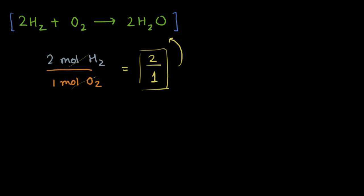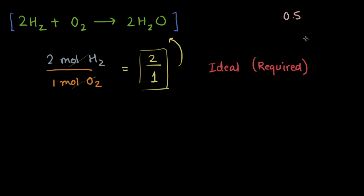This is the required ratio to make two moles of dihydrogen monoxide, which is a fancy way of saying water. This is the ideal — this is required. Now let's say you are given some hypothetical amount: half a mole of oxygen and two moles of hydrogen.